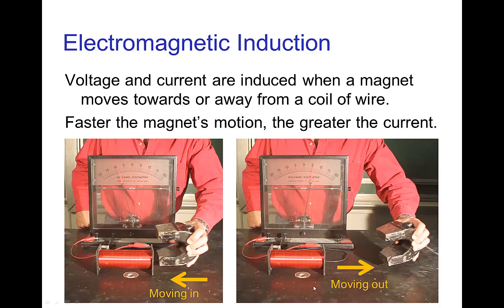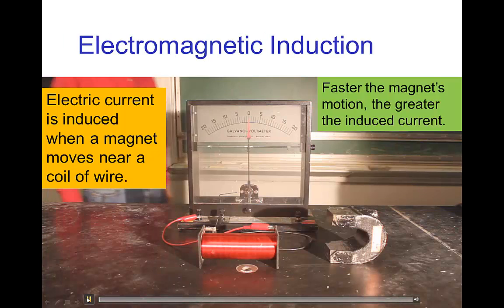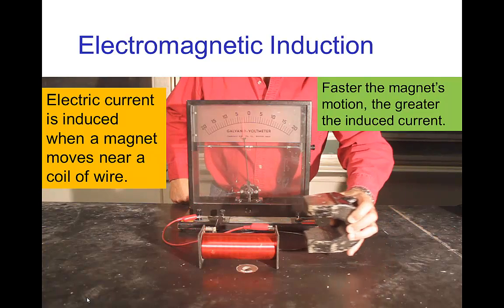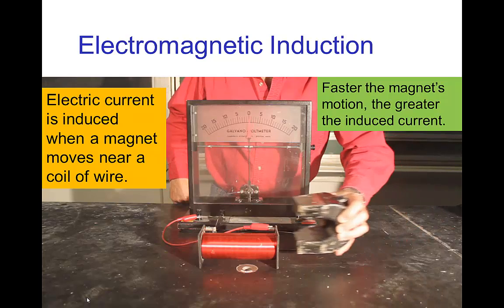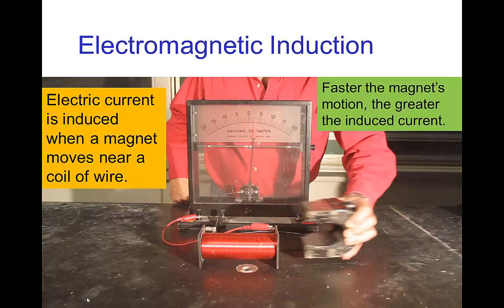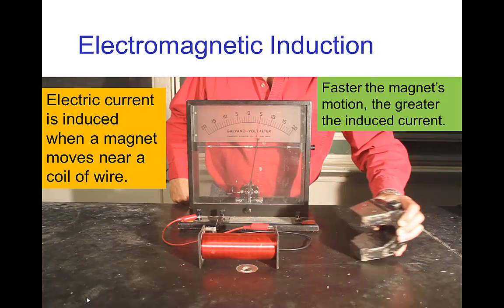When I move the magnet away, the charges move in another direction. If I just hold the magnet still, then the current stops. You see the magnet sitting there. Now, when I start moving it, you see that the meter is indicating the current. And the faster I move the magnet, the more current I can produce.